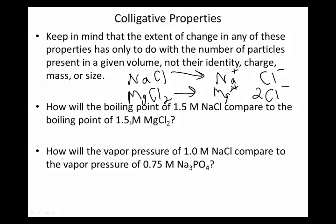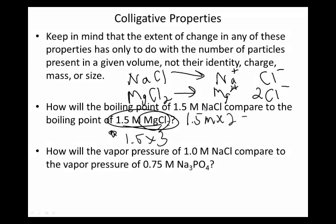So 1.5 molar magnesium chloride actually increases the boiling point more than 1.5 molar sodium chloride would, compared to the pure solvent. The way you can figure this out is that a given ionic compound has an effective concentration, as far as colligative properties are concerned, equal to the molarity times the number of particles it makes when it dissociates. So 1.5 molar sodium chloride gives an effective concentration of 3 molar, while 1.5 molar magnesium chloride gives 4.5 molar — so the effect is greater for magnesium chloride.